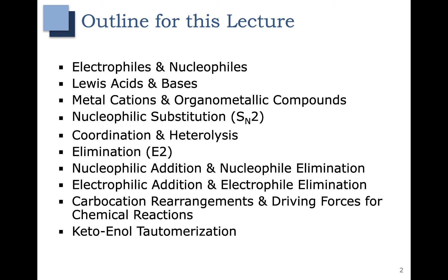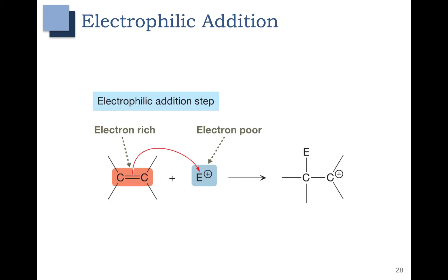In this video we're going to talk about electrophilic addition and electrophile elimination. In electrophilic addition we are reacting with a carbon-carbon pi bond and an electrophile. Electrophiles, as you recall, are electron poor or want electrons. So electrophiles are typically going to have a positive charge or have a very large delta plus.